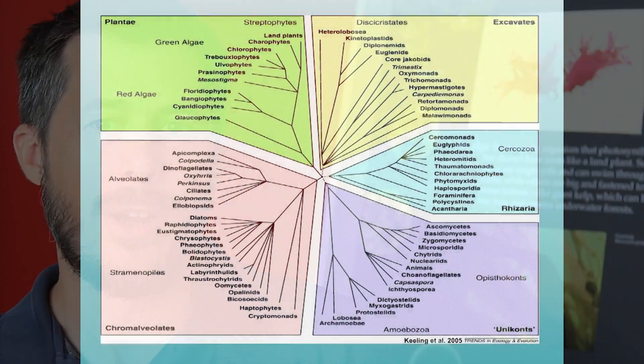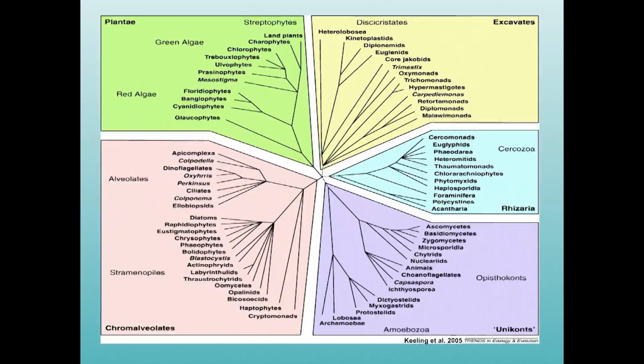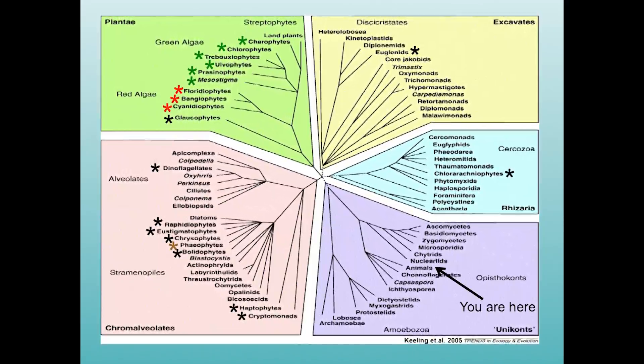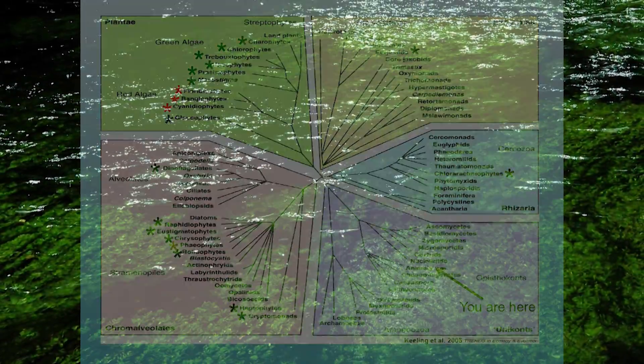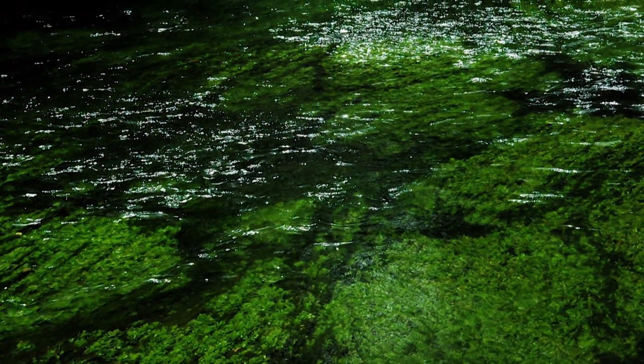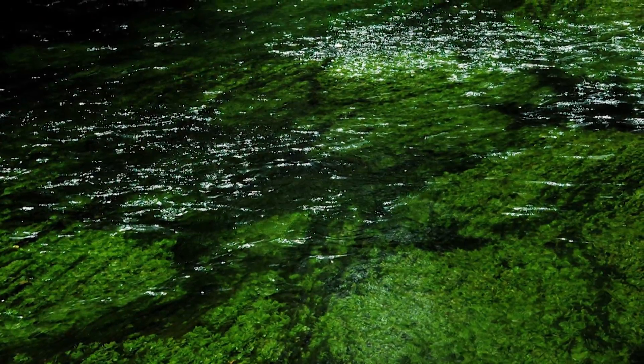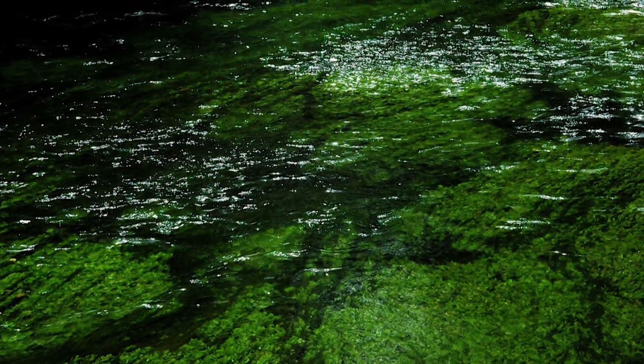One of the coolest things is the way that algae are spread throughout the whole eukaryotic tree of life, and various species of algae have diverged as long as one and a half or two billion years ago.